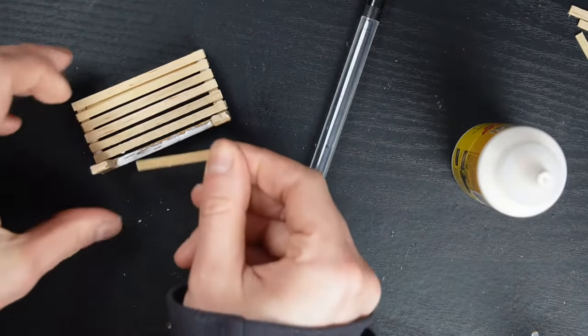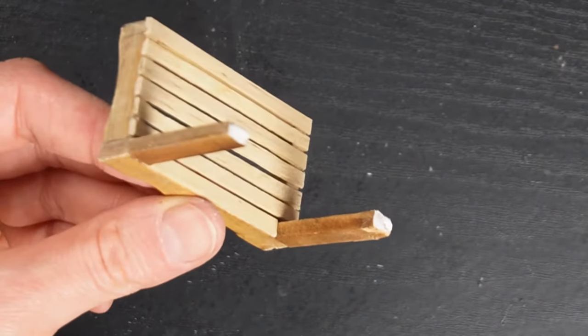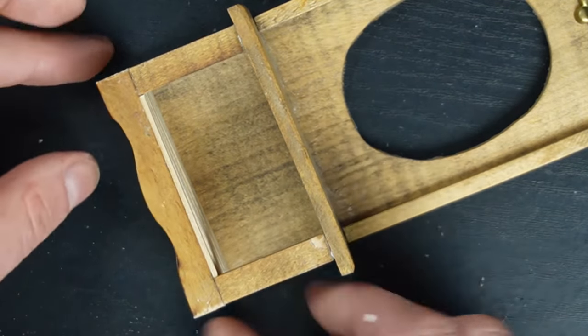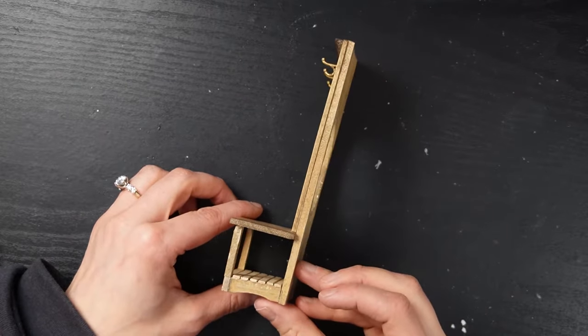I finished it off by gluing another piece of coffee stir stick in between the front legs. With the new bottom shelf in place you can see how much more open this piece of furniture looks than what we started with.